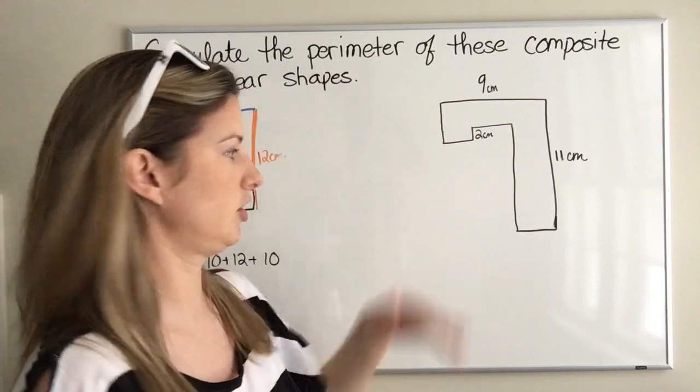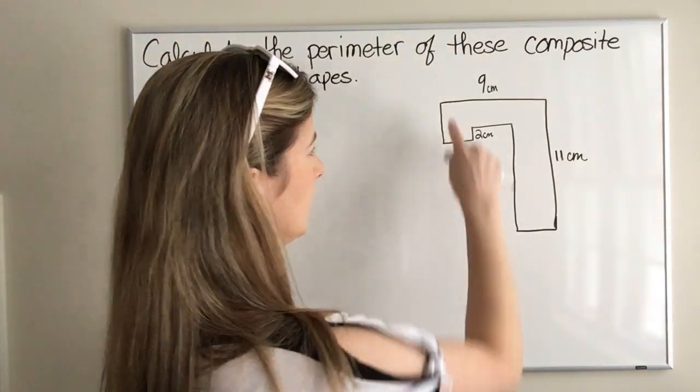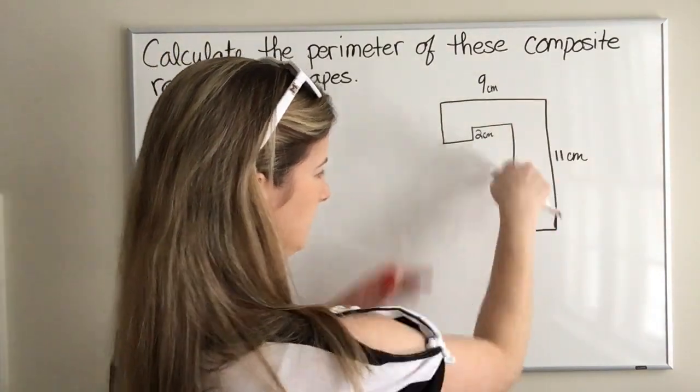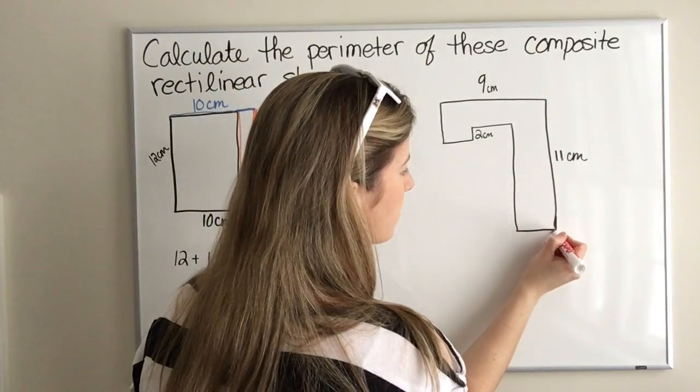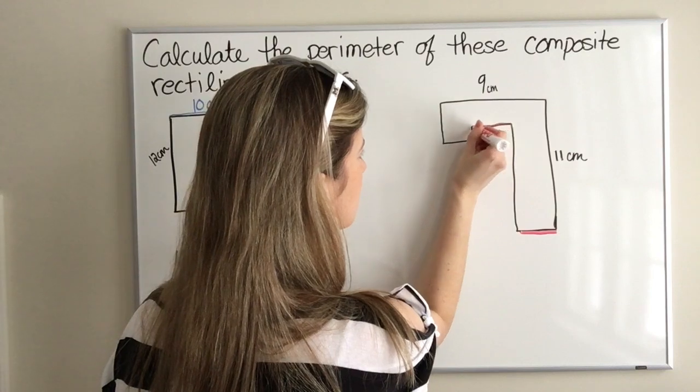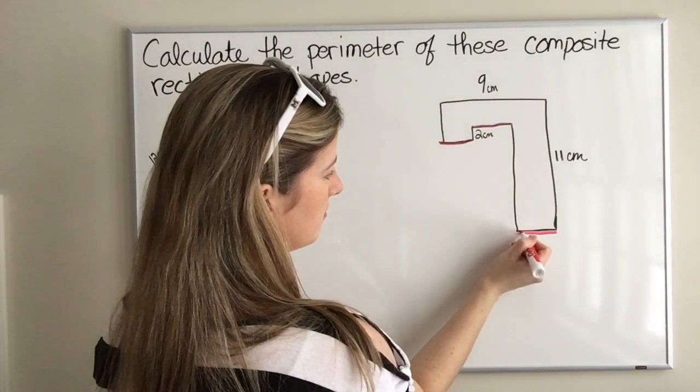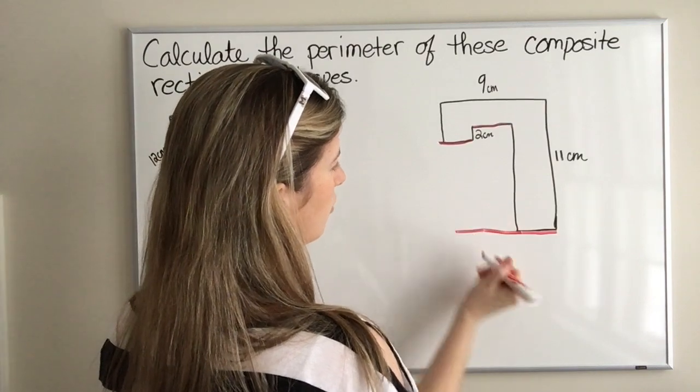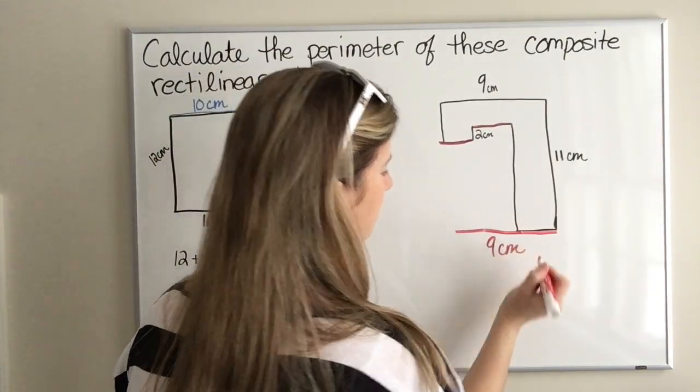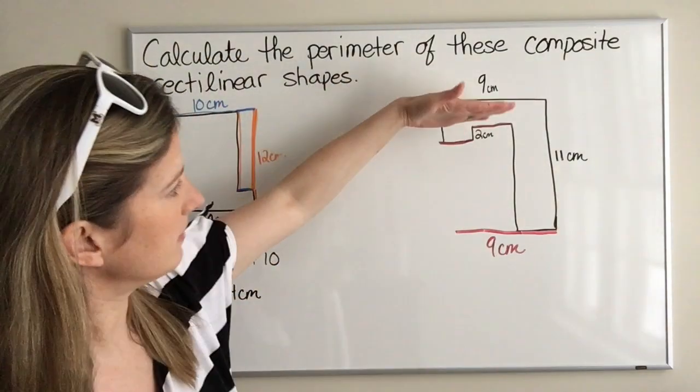What if we took the same approach? I'll try red this time. We know this is 9. Let's think about this side down here. What if we took this and then this piece and then this piece? We take these two pieces and we move them down. We're gonna end up with 9 centimeters down here.